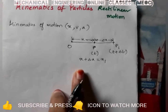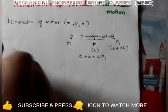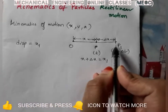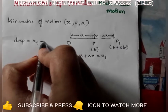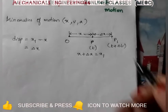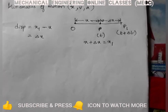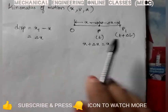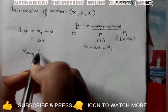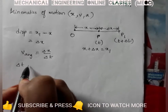So the displacement of the particle from P to P1 is nothing but x1 minus x, which is delta x. This is a vector quantity. The average velocity, having displacement delta x in delta t time, is: v average equals delta x divided by delta t.